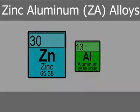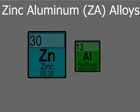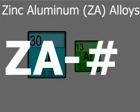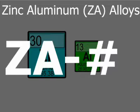ZA alloys are specified by the letters ZA followed by a hyphen and numerals, which indicate the approximate nominal aluminum content. There are three alloys in this group: ZA8, ZA12, and ZA27.